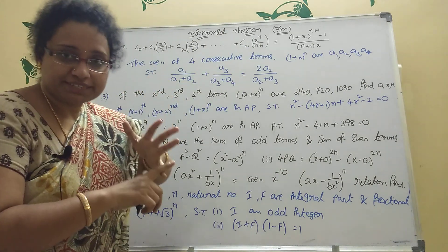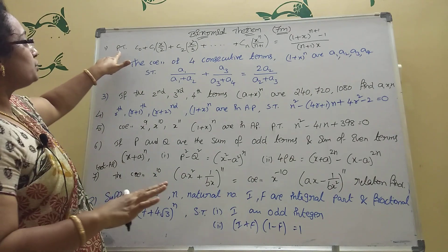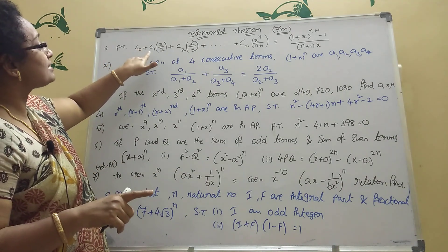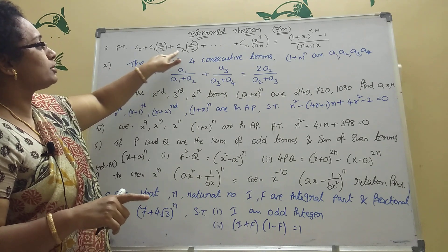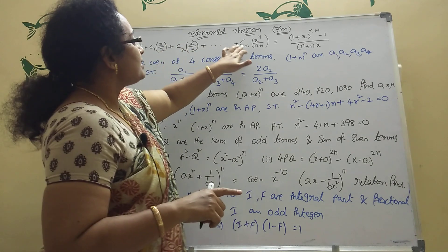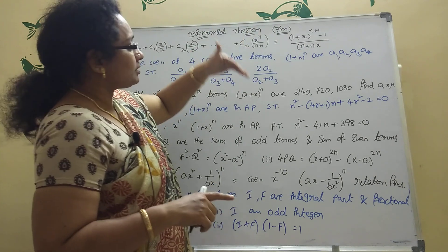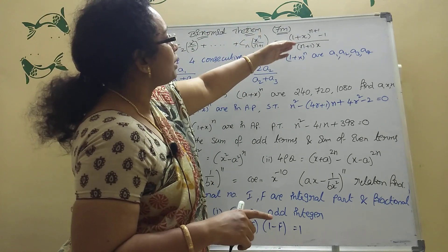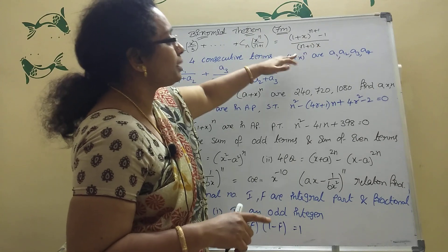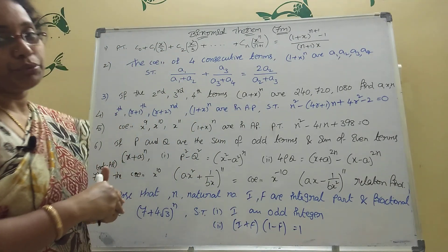Now coming to the point — Binomial Theorem, the second one — the first important model is: prove that C₀ + C₁·(x/2) + C₂·(x²/3) + ... + Cₙ·(xⁿ/(n+1)) equals (1+x)^(n+1) − 1 divided by (n+1)·x. This is an important model.